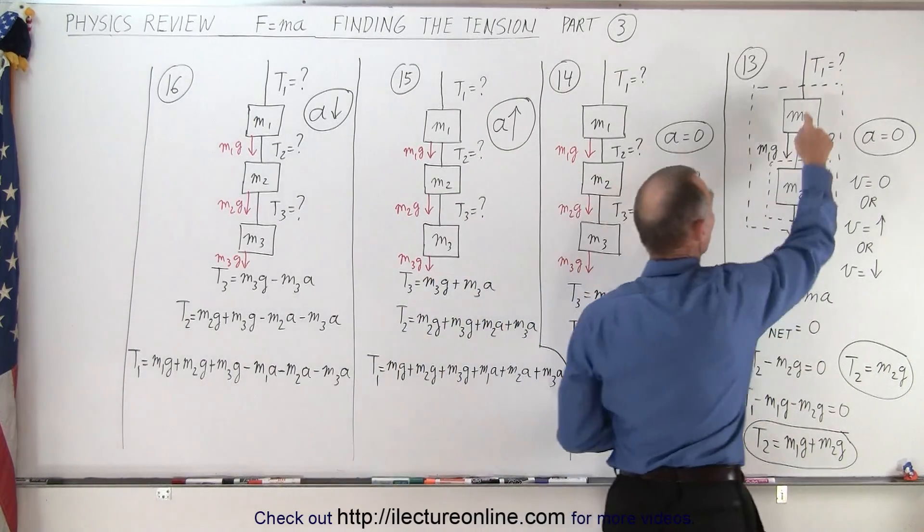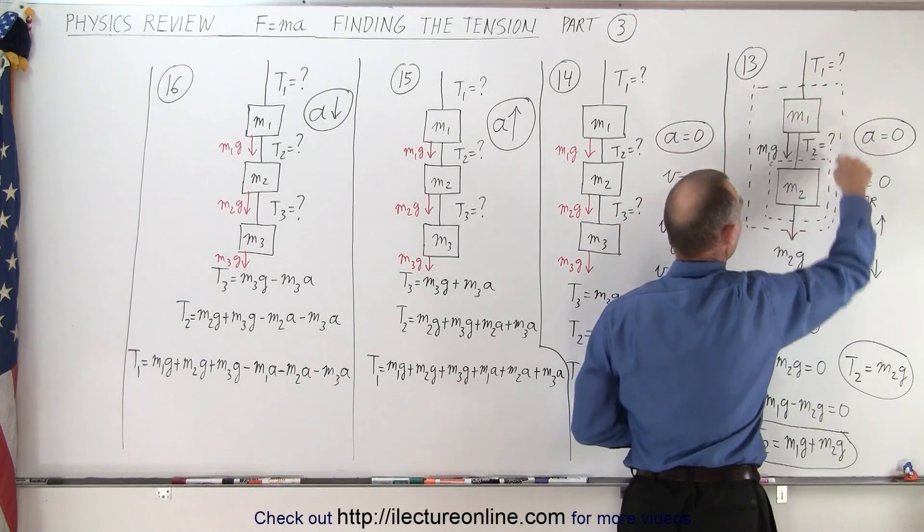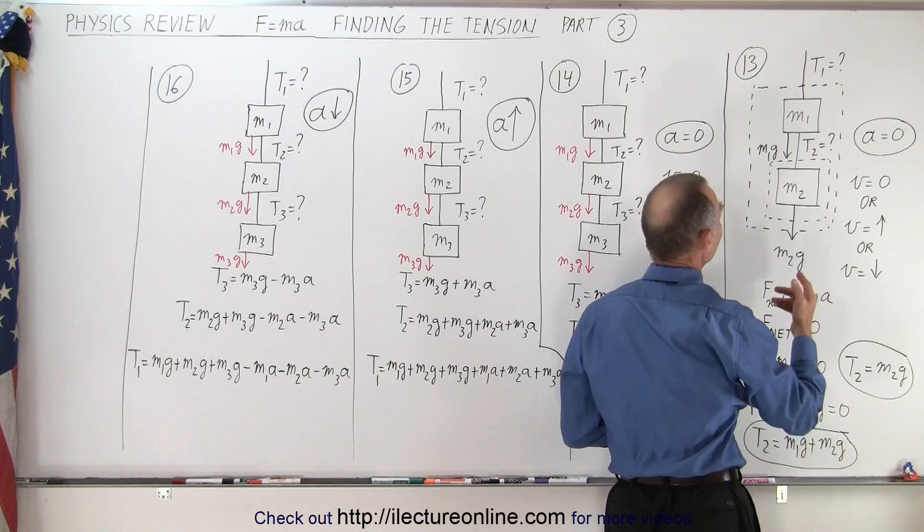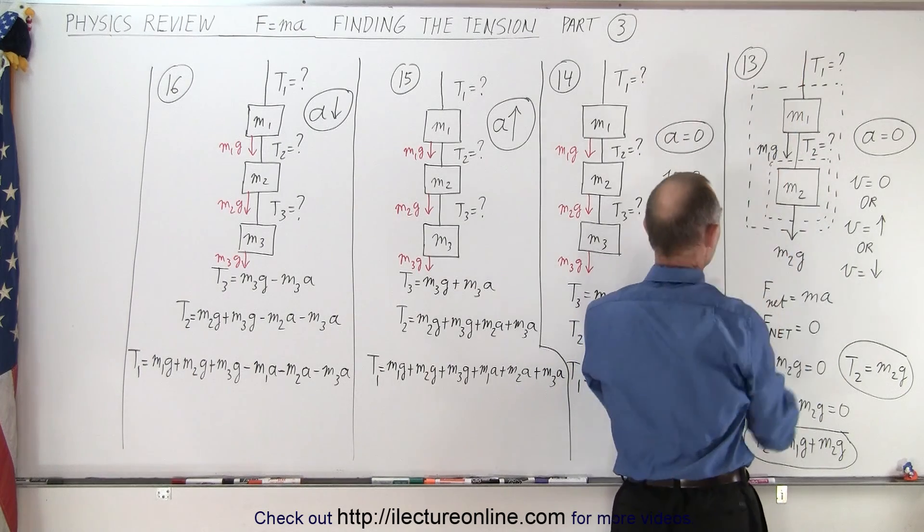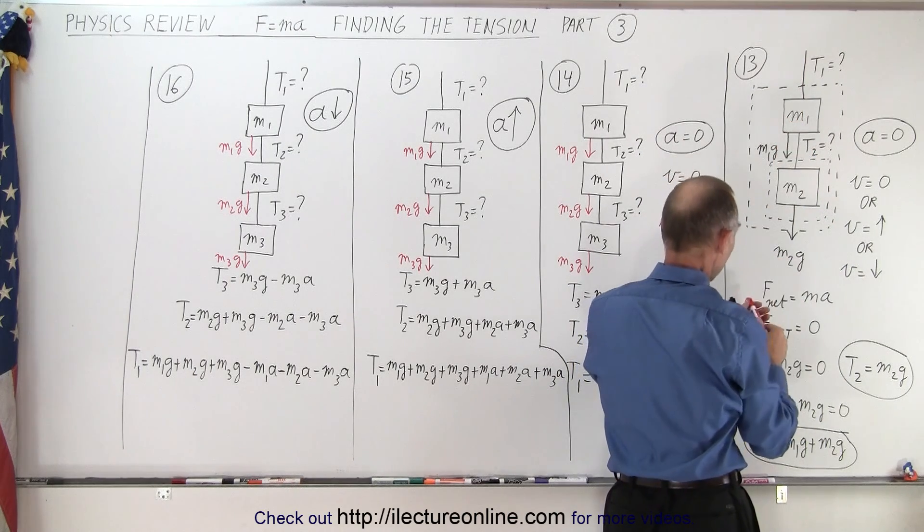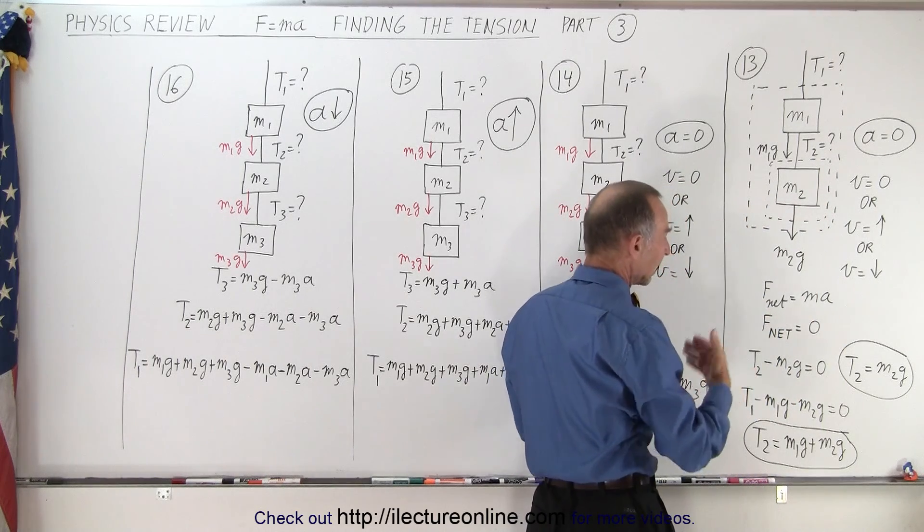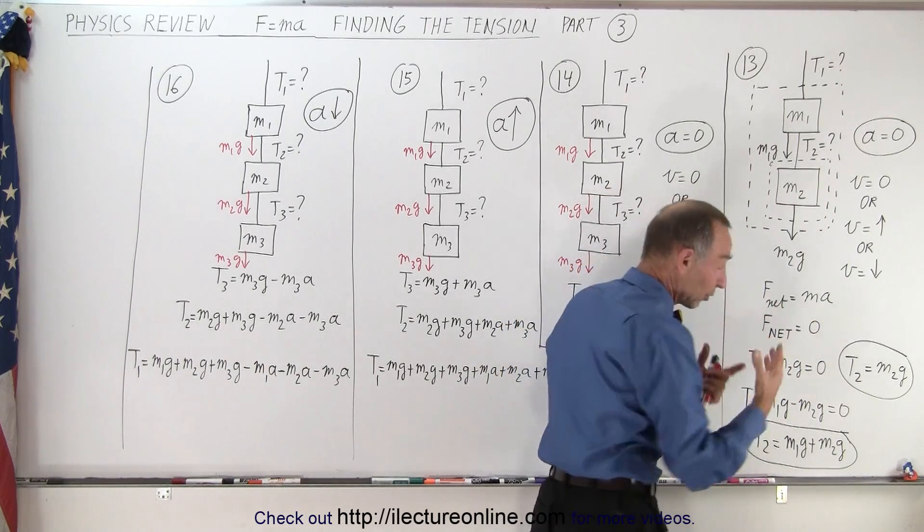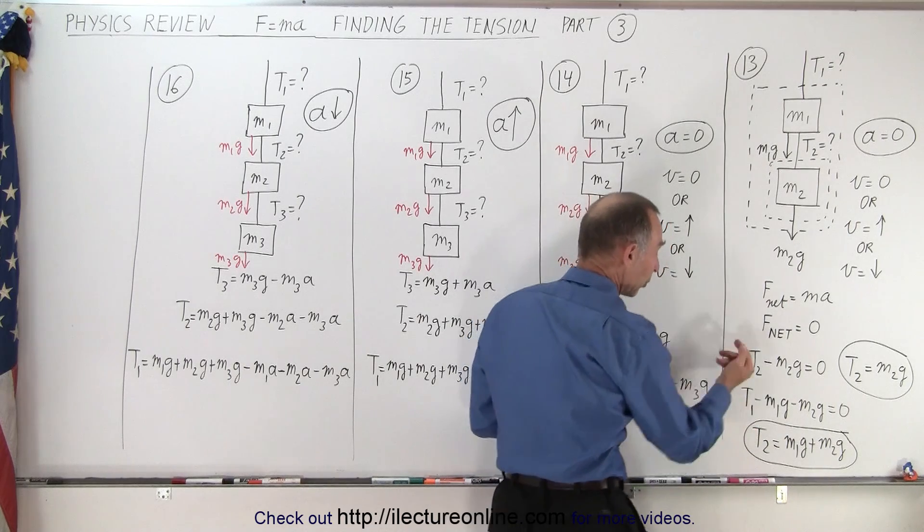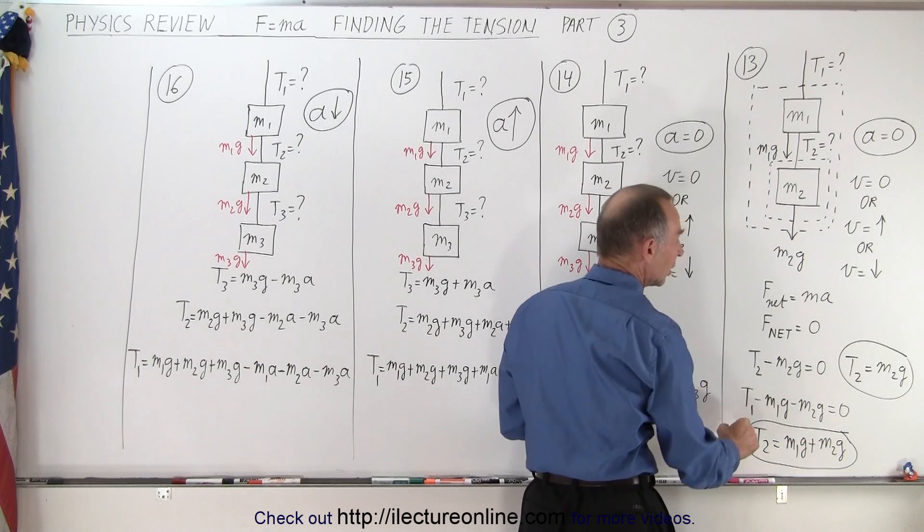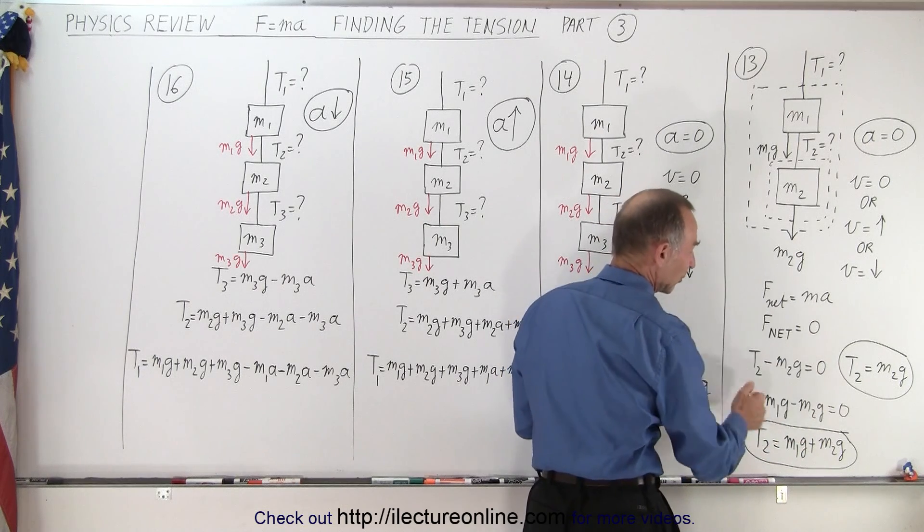If we want to find out what tension one is equal to, then we draw a free body diagram around both of these objects. We can then see that we have tension one pulling upward, we have M1G pulling downward, and we have M2G pulling downward. So we can say that the net force must equal zero. Again, there's no acceleration, but we have one upward force, which is T1, and two downward forces, which is M1G and M2G, and when you add them all up, you get zero.